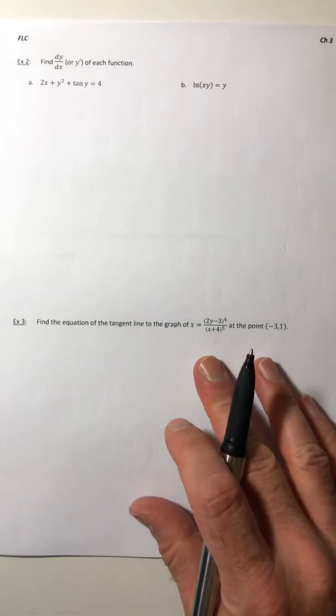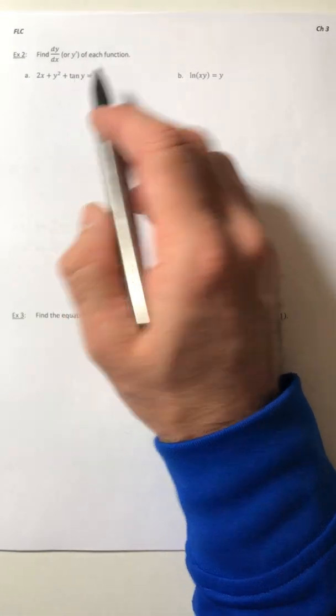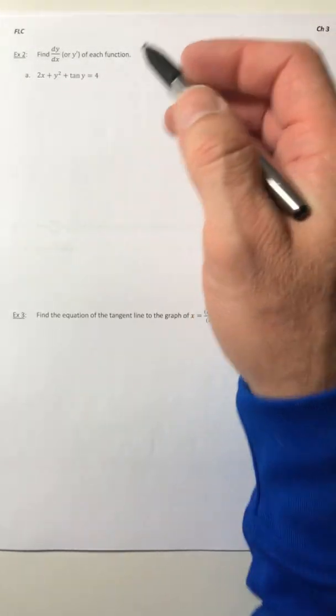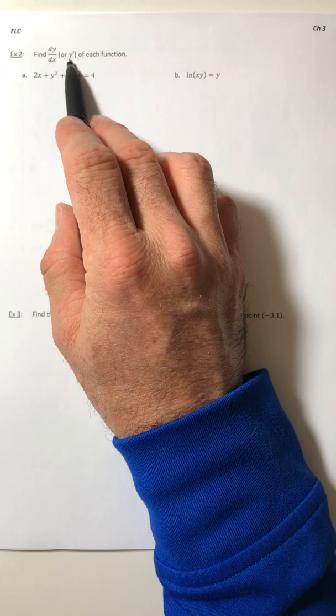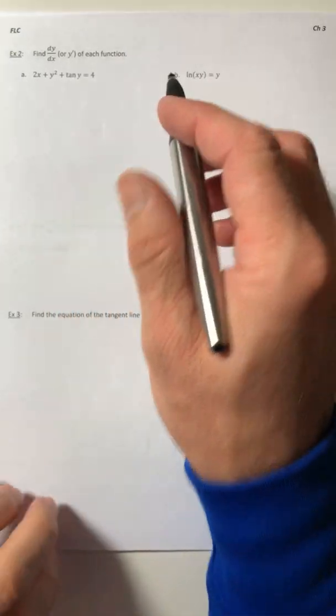Alright, let's pick up where we left off with this implicit differentiation stuff. So example two, same thing as before, find dy/dx or y prime if you would rather, of each function.